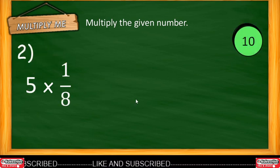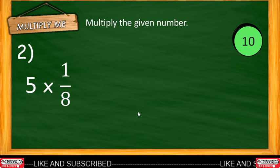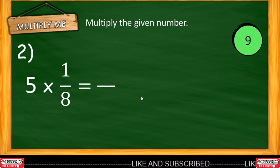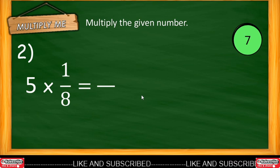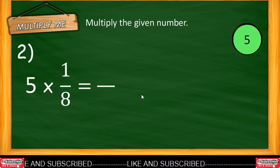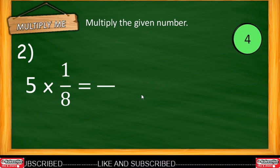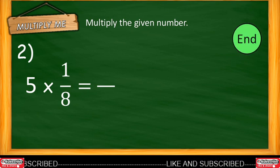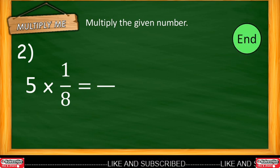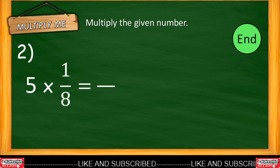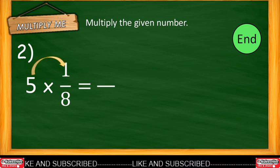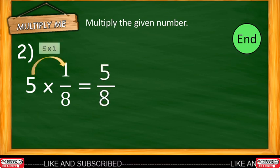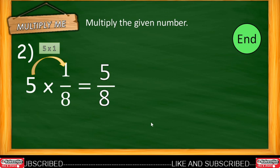Example 2: 5 multiplied by one-eighth. You have 10 seconds to answer. Our timer starts now. Time is up. Let's reveal the answer. 5 multiplied by 1 — the answer is 5. So the answer is five-eighths.